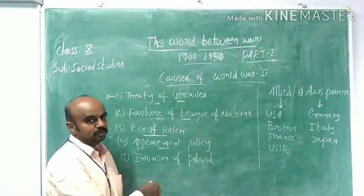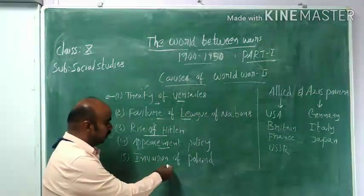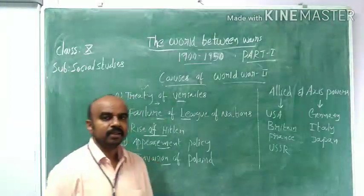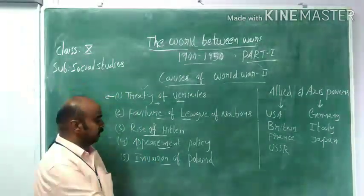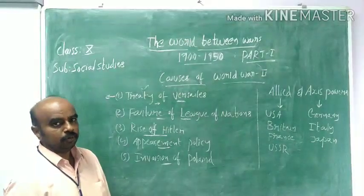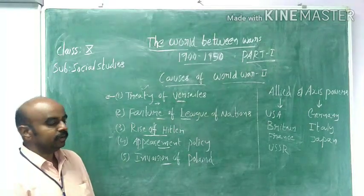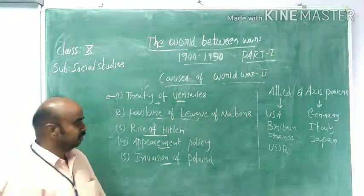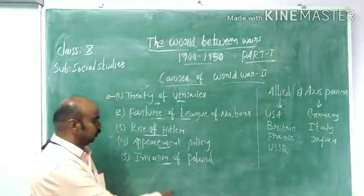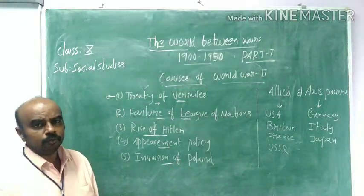This appeasement policy was also responsible for the outbreak of World War II. Finally, the invasion of Poland: on 1st September 1939, Hitler invaded Poland at a fort known as Danzig. The invasion of Danzig on 1st September 1939 marked the starting of World War II. These are the five major reasons for the outbreak of World War II.